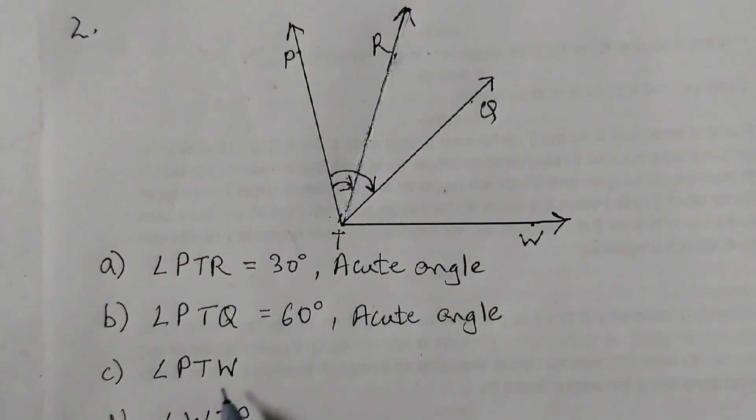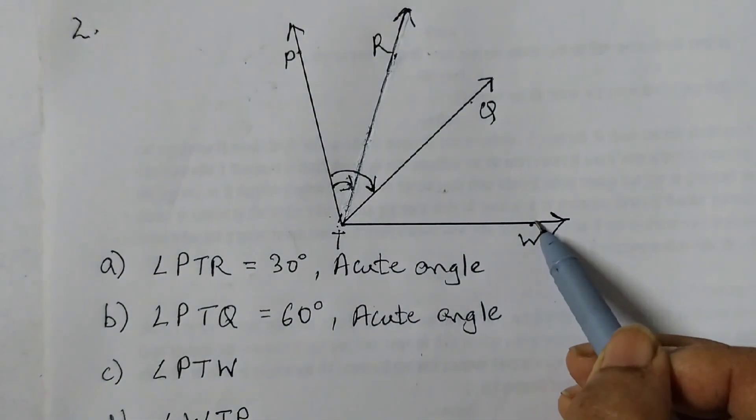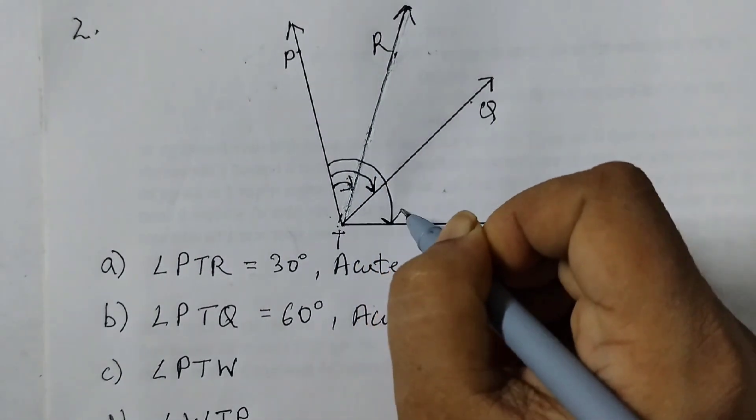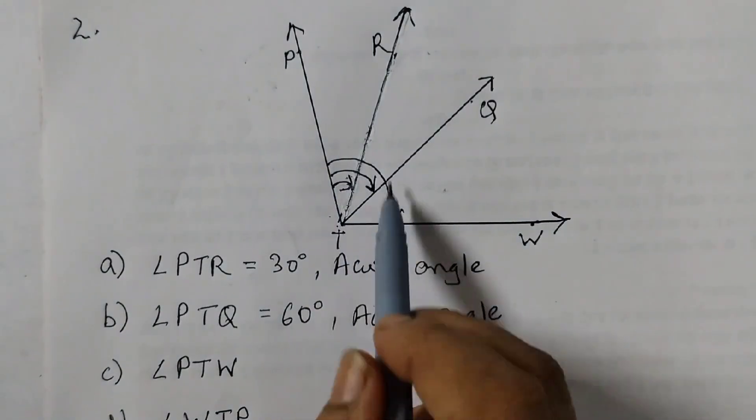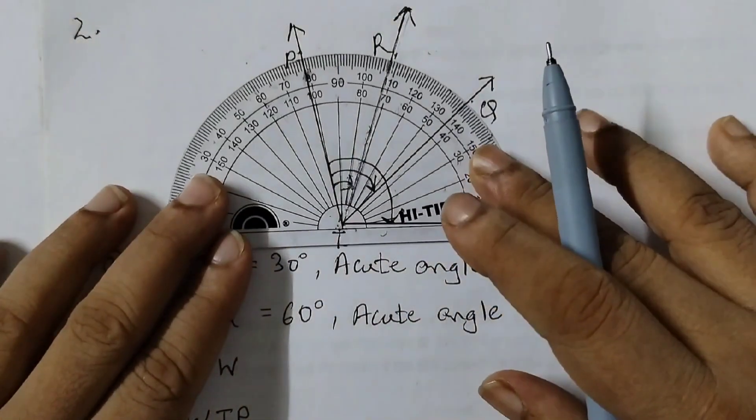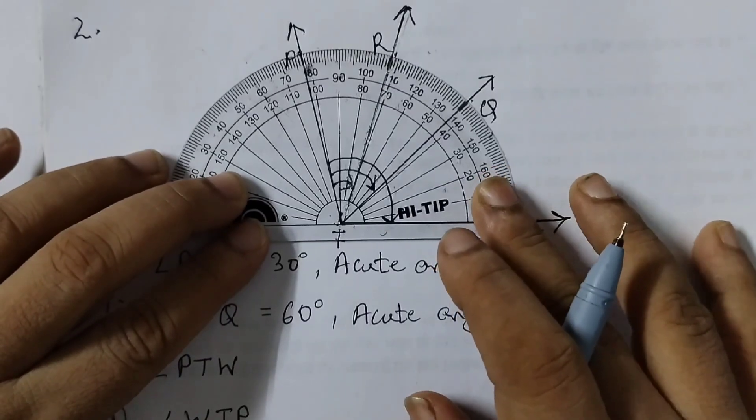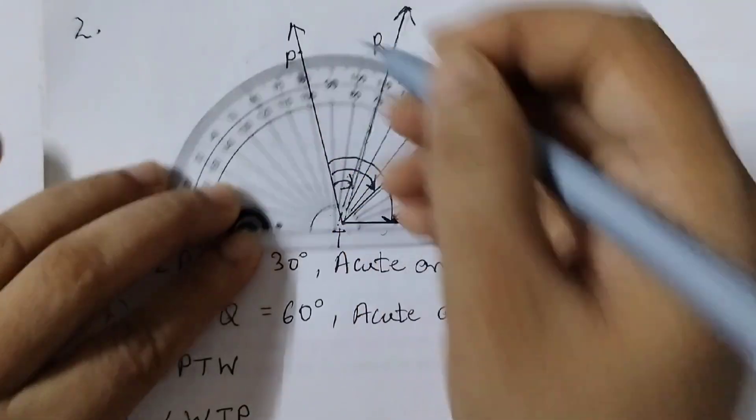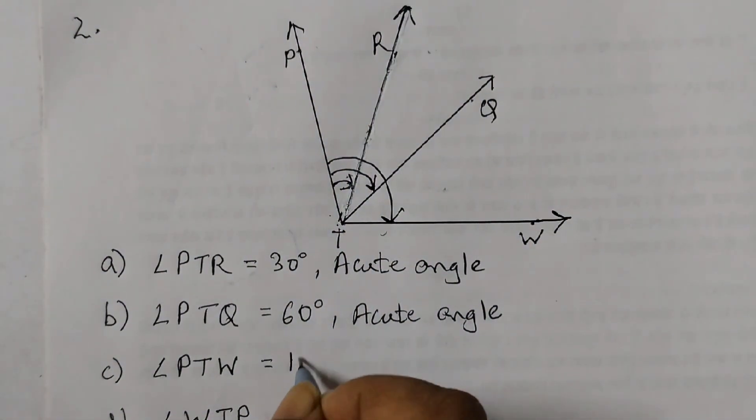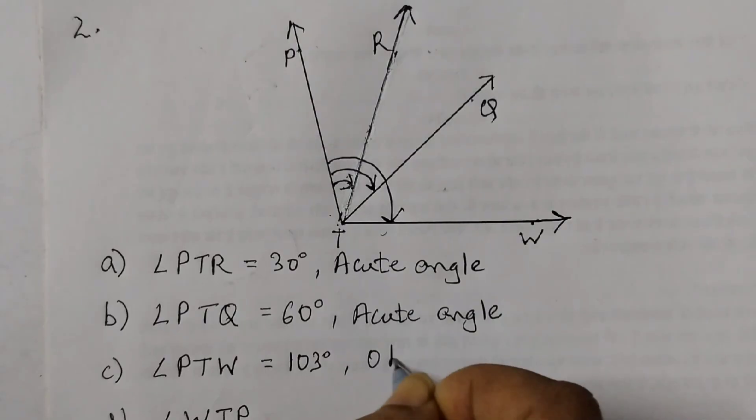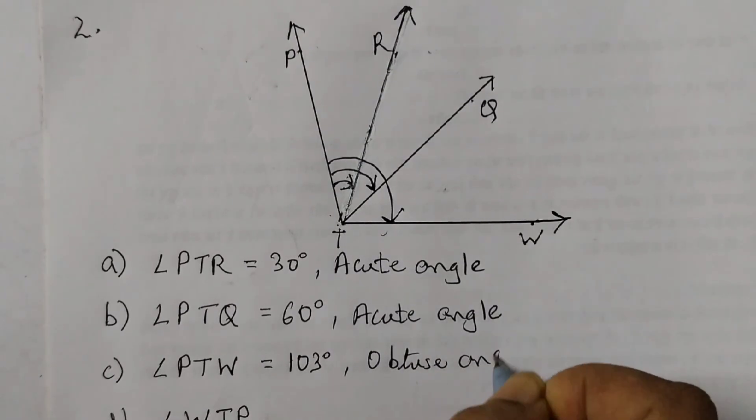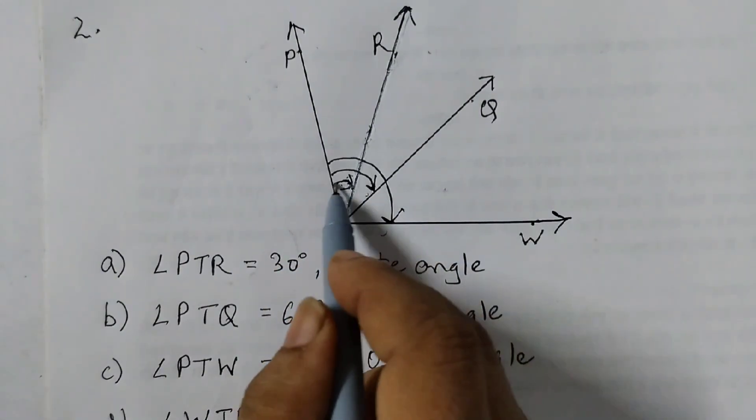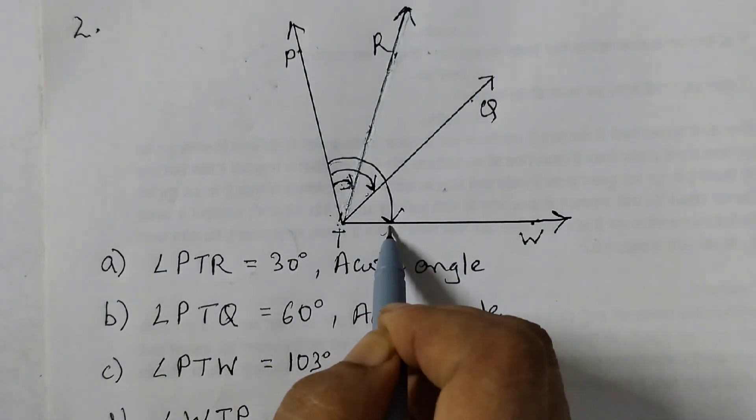Next is PTW. P, T, W. Let's check the arrow, that is the curve. It is given like this, which means we need to find this much amount of rotation. So we can place a protractor like this. And when we measure it, we see it's somewhat 103 degrees. P, T, W is 103 degrees. That's an obtuse angle. So this one here is 30, this one is 60, and this angle here is 103 degrees.